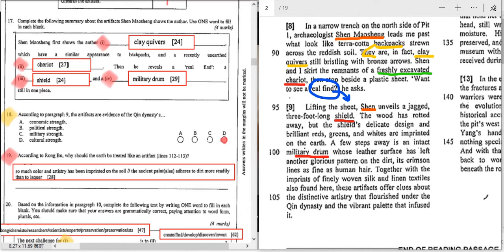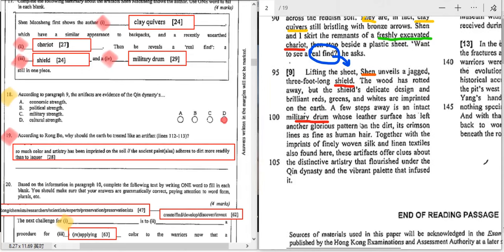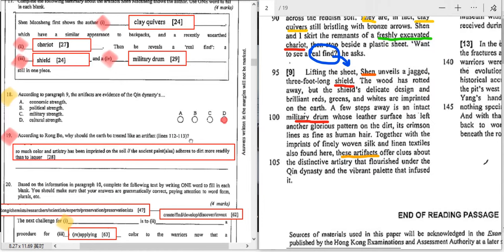So I didn't just give you the answers. I also gave you tips on how to locate similar words and how to make a better guess at the answers. That's what I want to do so badly instead of just giving you the answers. Number 18, paragraph 9. The artifacts, including the clay quivers, the chariot, the shield, the military drum. These artifacts are evidence of the Qing dynasty's something. Well, we have to move on to the next sentence.